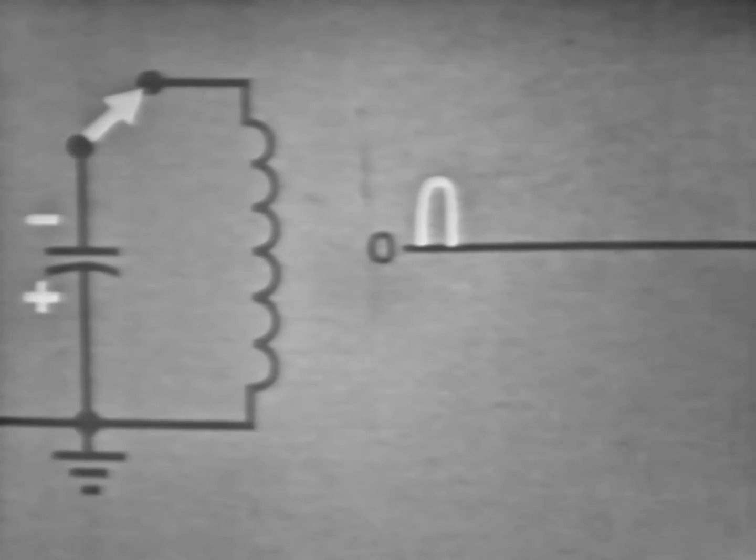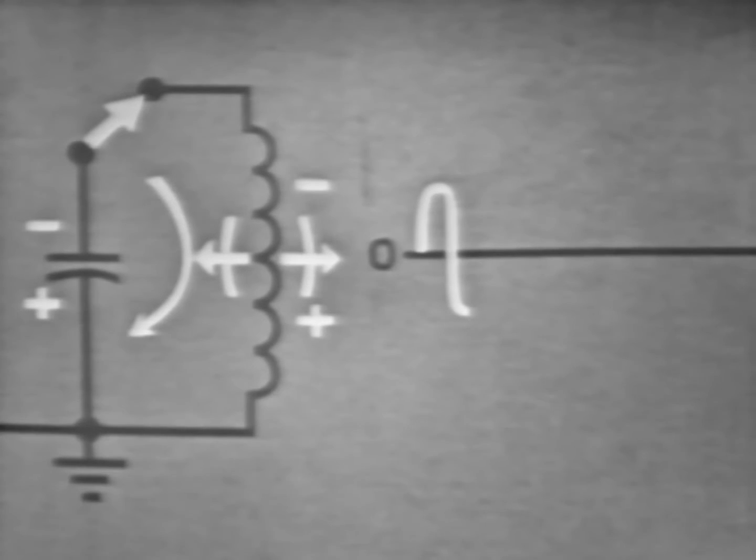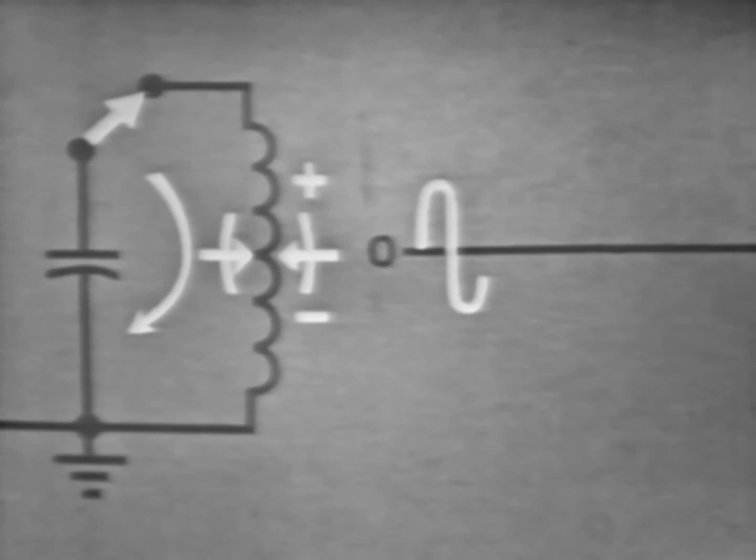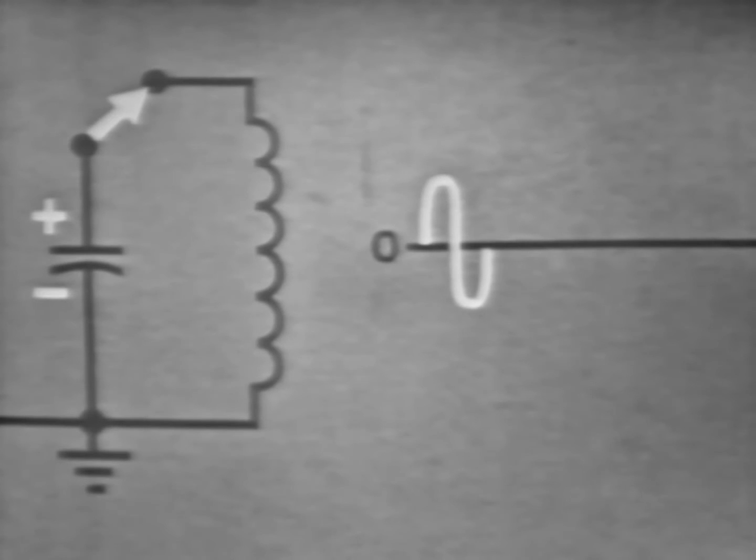Now when the field about the coil is completely collapsed, current is zero, and the capacitor is charged in the opposite direction. And it will again discharge through the coil. As current begins to increase, the field about the coil expands. Now notice that current is flowing in the opposite direction. So we'll show this on our graph. At some point, current will begin to decrease. And when it does, the magnetic field will start to collapse, reversing direction and returning energy to the circuit, which will cause the capacitor to recharge in the original direction. Now when the coil's field is completely collapsed, current is zero, and the capacitor is charged.